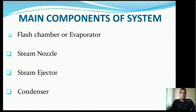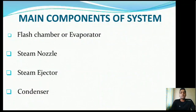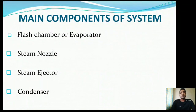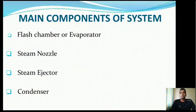The main components of the system are: flash chamber (evaporator), steam nozzle, steam ejector, and condenser. The flash chamber is a large vessel filled with the refrigerant, which is water. The steam nozzle receives high-pressure steam from the boiler and expands it, converting thermal energy into kinetic energy. The steam ejector is a pumping device that extracts gas or vapor from the system. The condenser is a shell-and-tube heat exchanger where water flows inside the tubes and refrigerant flows outside.